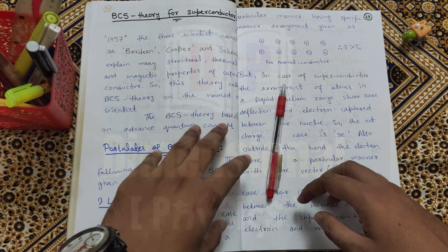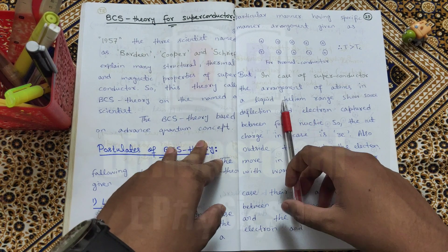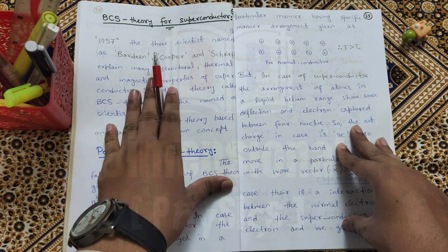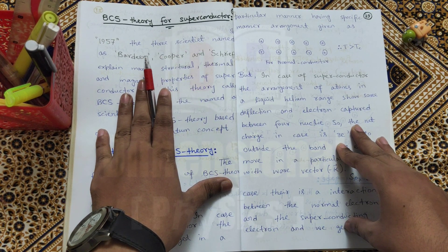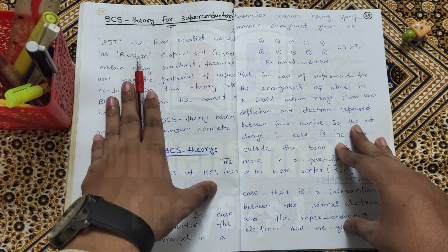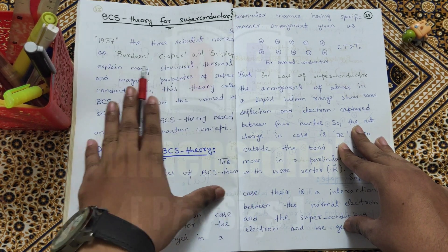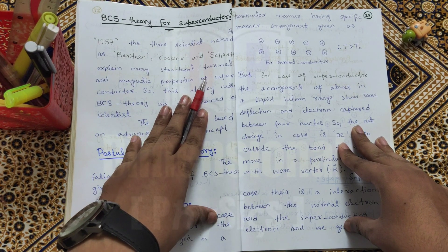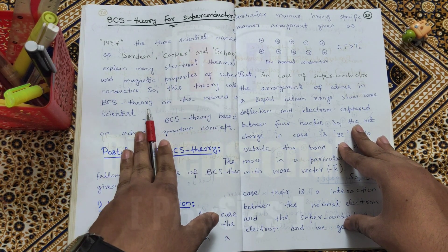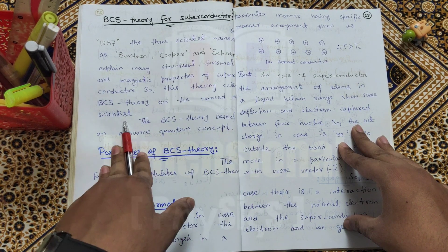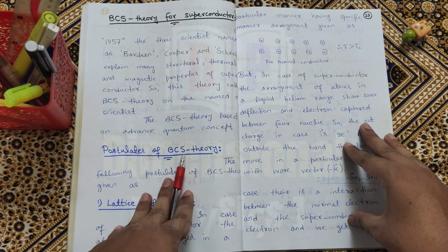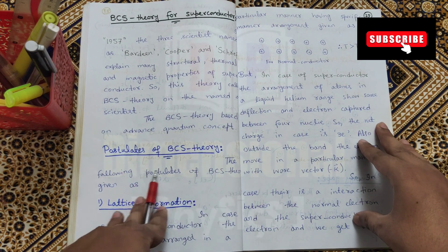Assalamu alaikum viewers, I am Muhammad Ibrahim on the platform of Dimensional Physics. Students, we will discuss BS physics solid state physics topic: BCS theory of superconductors. In 1957, three scientists named Bardeen, Cooper, and Schrieffer explained many structural, thermal, and magnetic properties of superconductors. This theory is called BCS theory, based on the names of these scientists. The BCS theory is based on advanced quantum concepts.